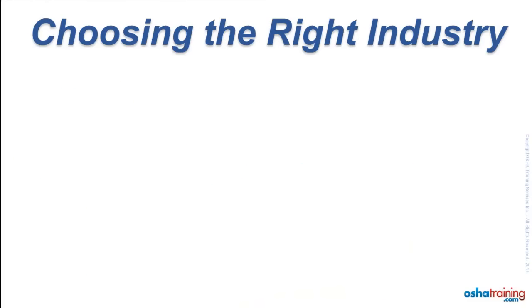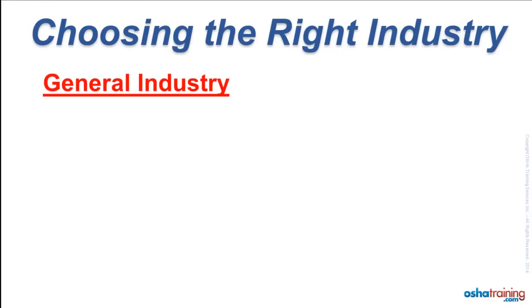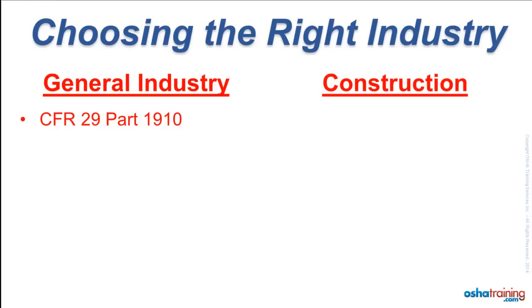The OSHA training courses cover one of two major industry categories. The first is called general industry, which covers the OSHA standards that appear in part 1910 of the Code of Federal Regulations. There are also OSHA training courses that cover the construction industry, which is regulated by part 1926 of the Code of Federal Regulations.